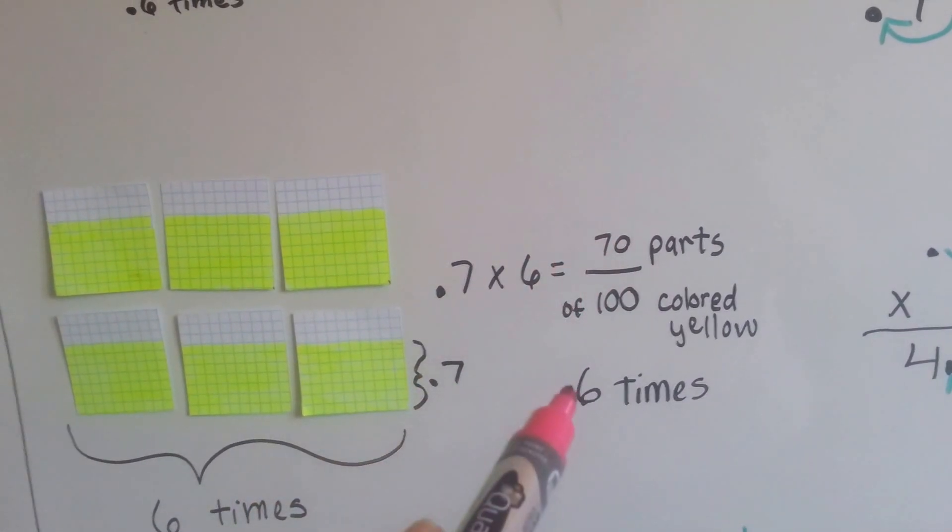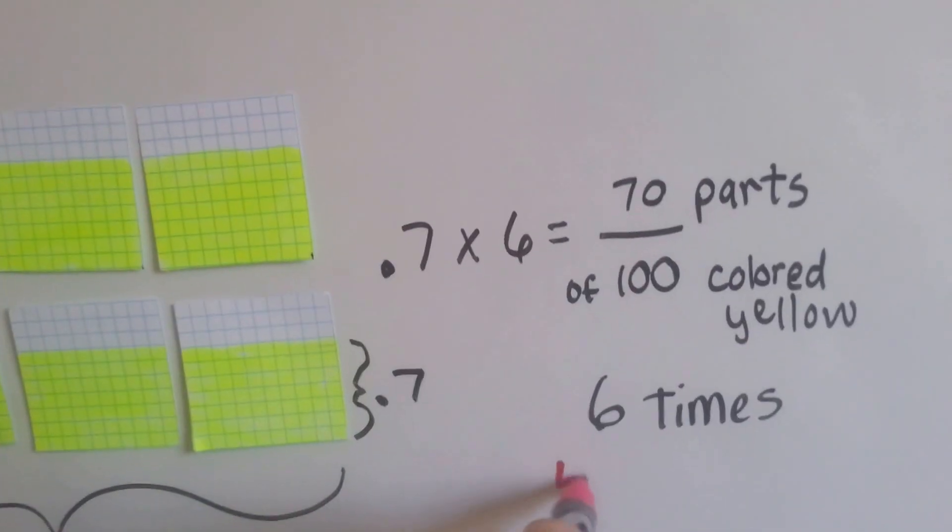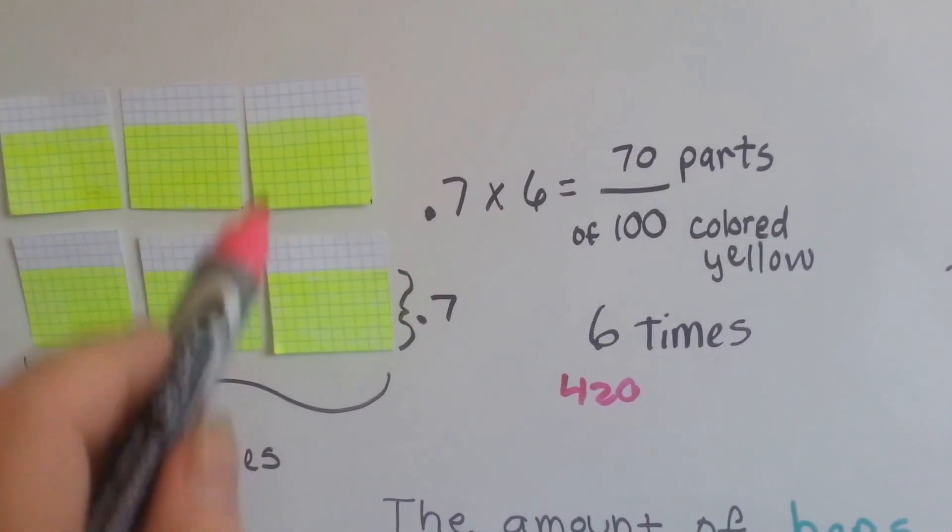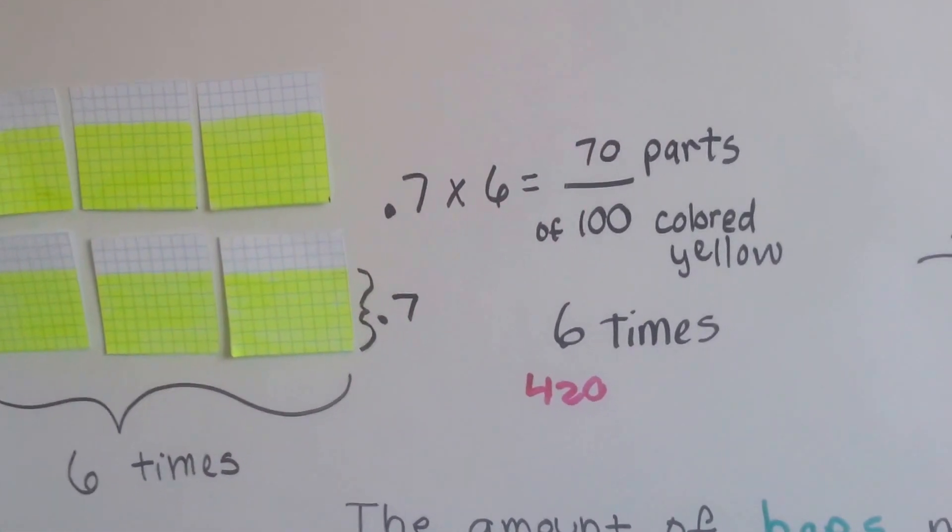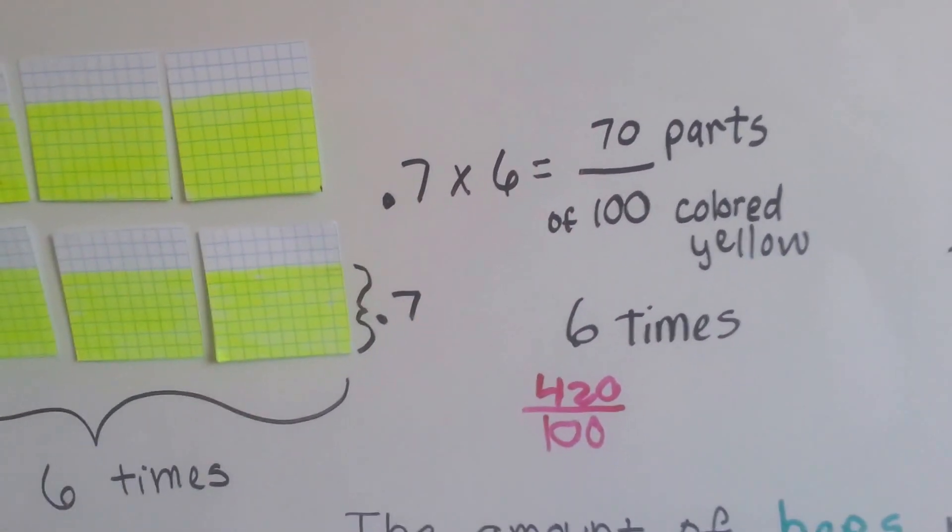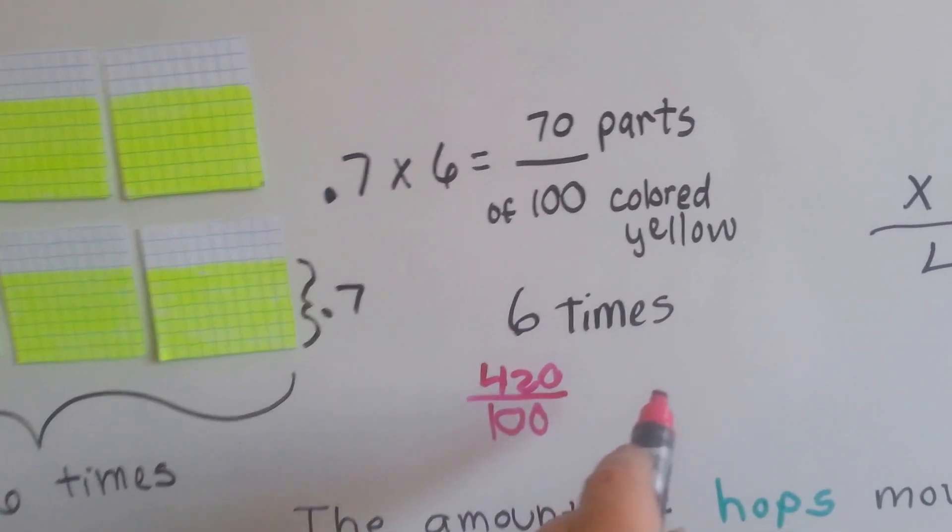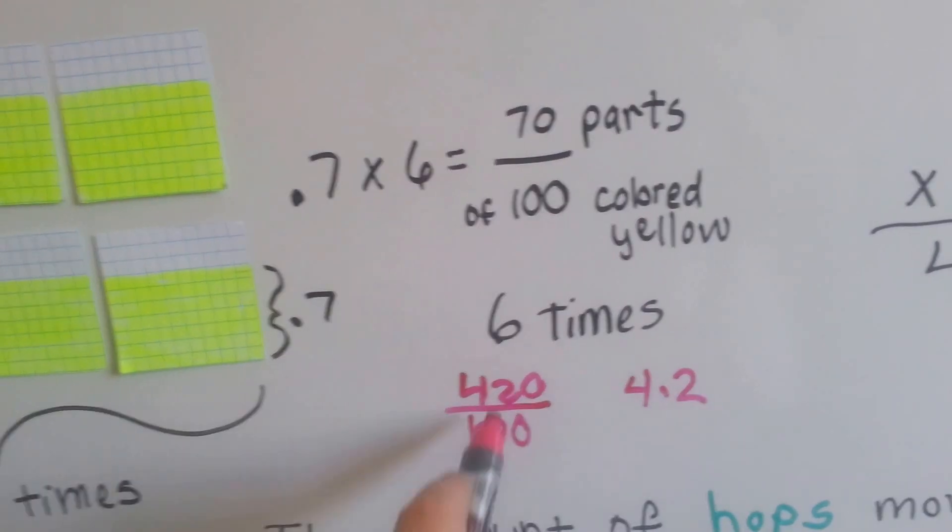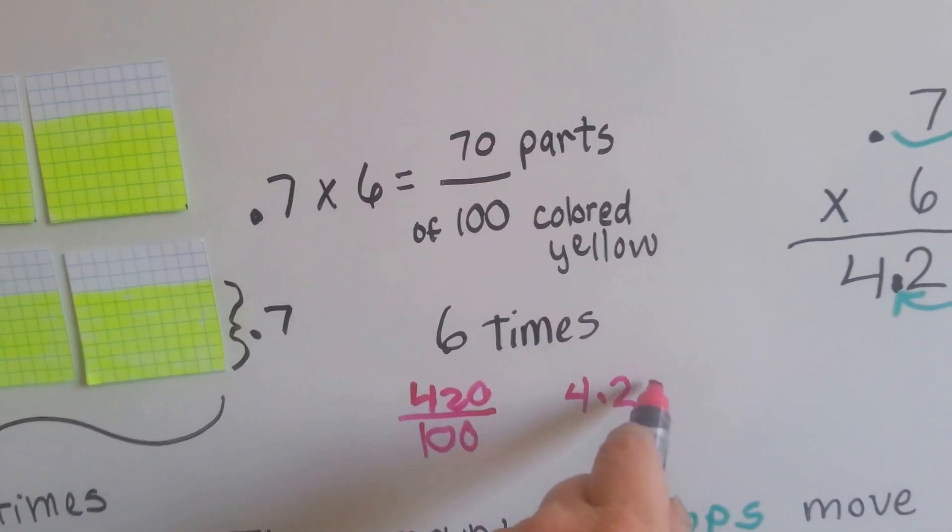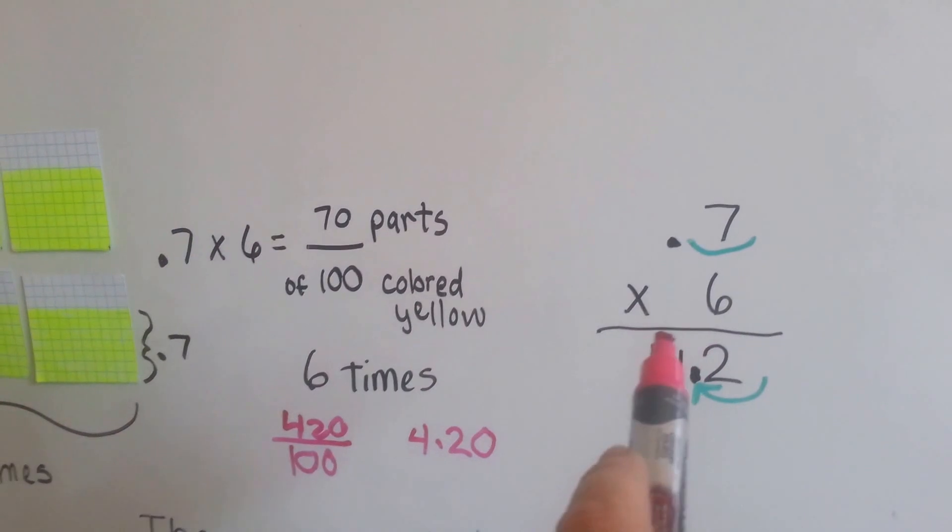Now there's seventy parts out of a hundred that are filled in on each one of these cards that we have to multiply six times. That means seventy times six is four hundred and twenty little squares are filled in. Four hundred and twenty of these little squares are colored yellow out of one hundred that are on each card. Well, now we have an improper fraction, don't we? And if we undid this improper fraction, it would come out to 4.2 because we'd have four full hundreds with twenty hundreds left over. So we could even say it's like that.